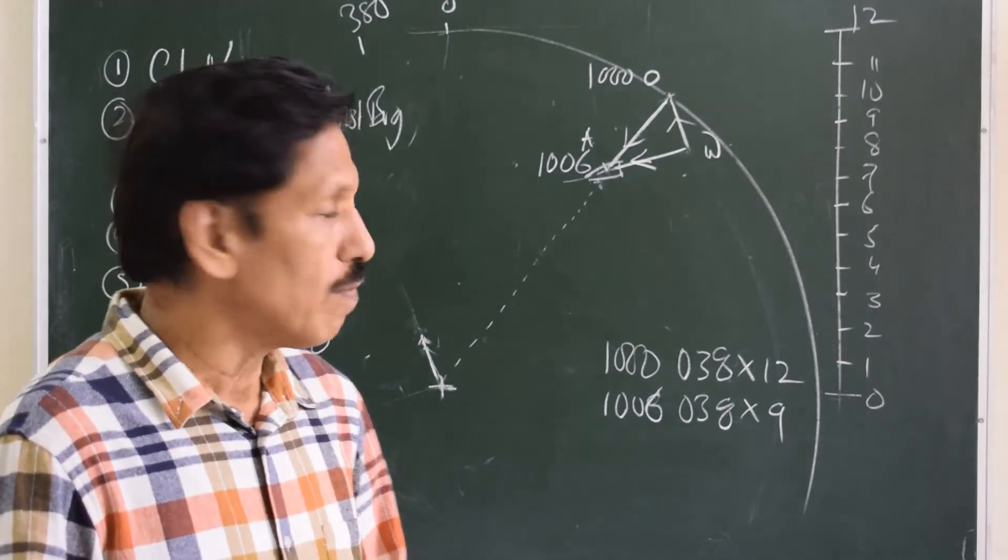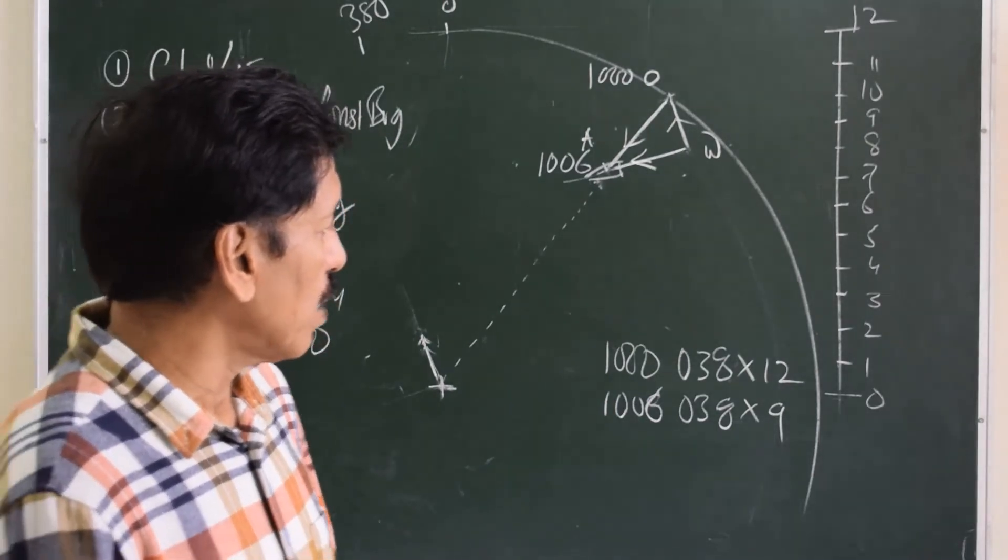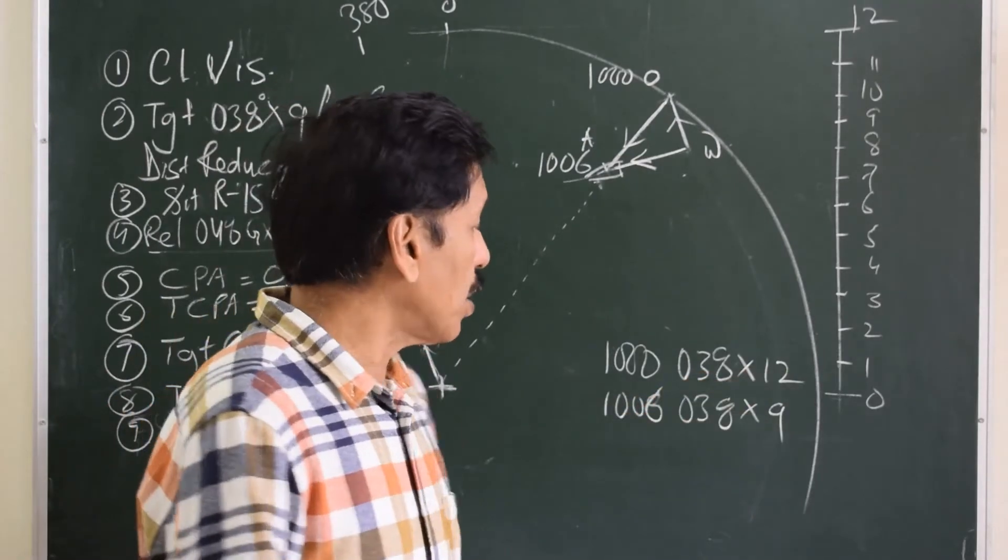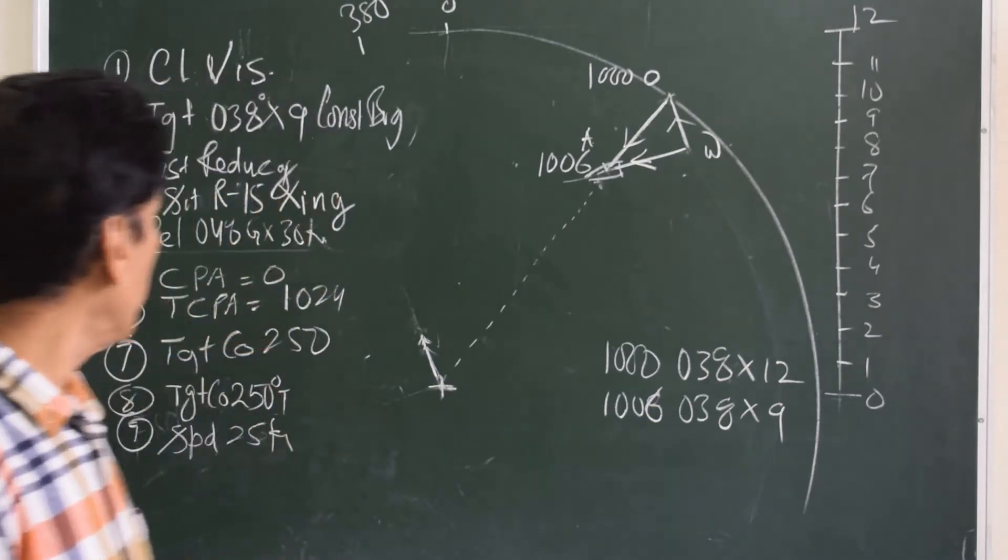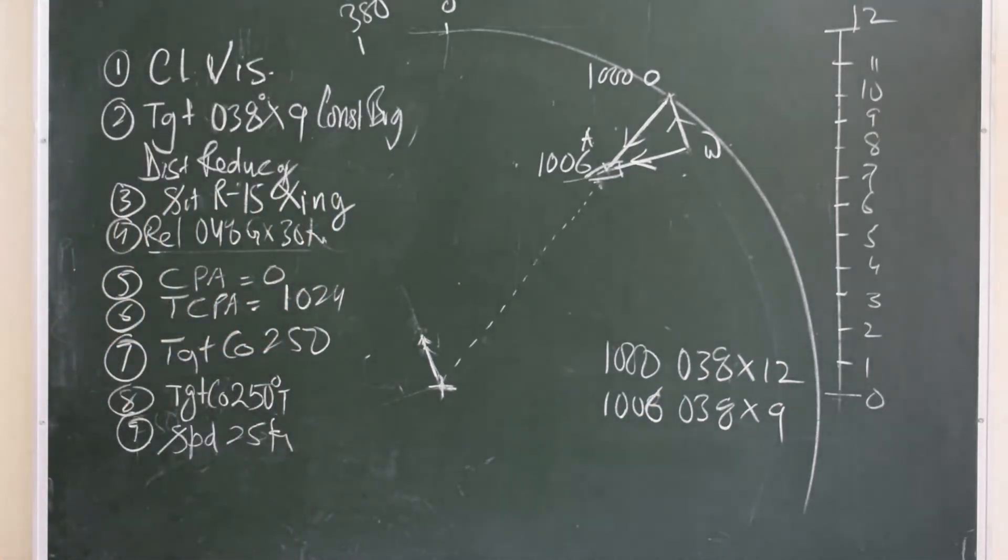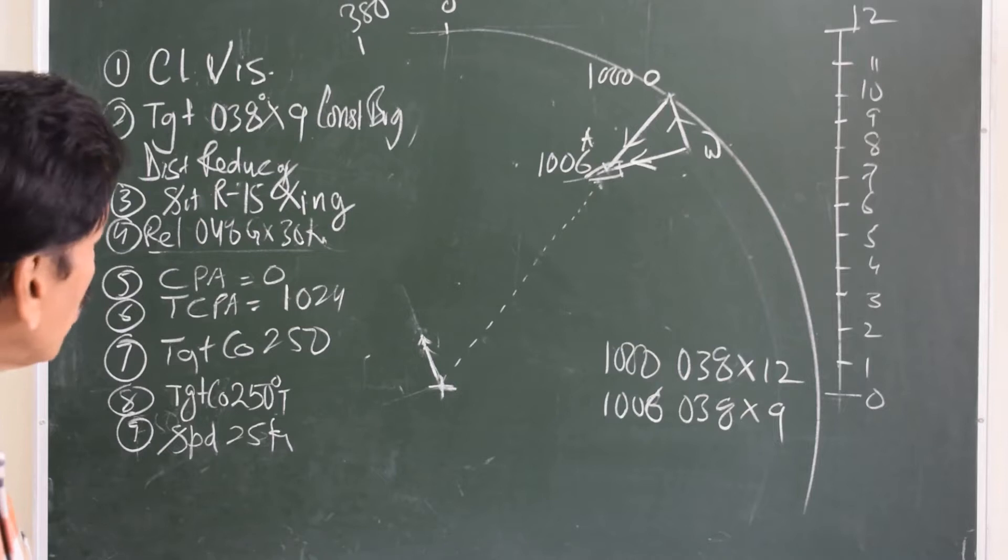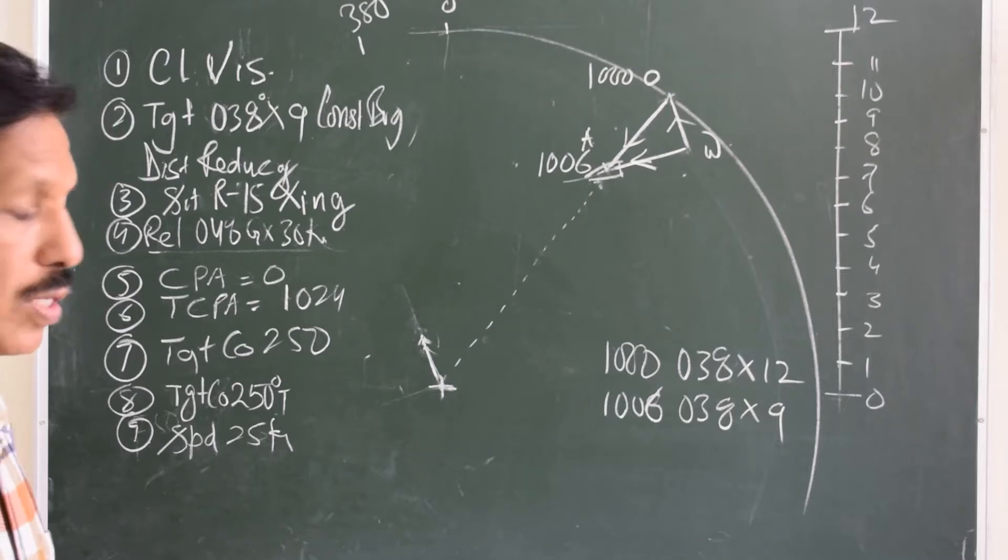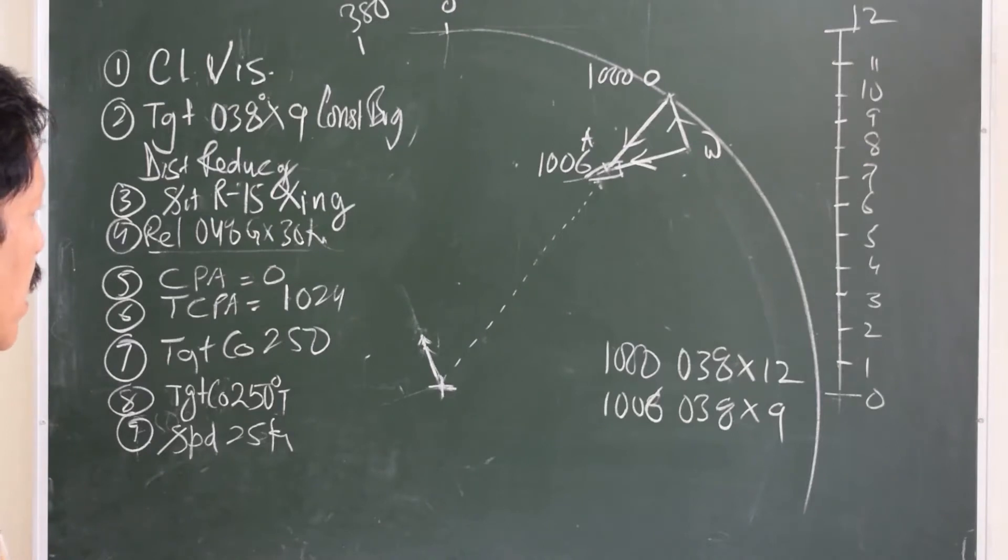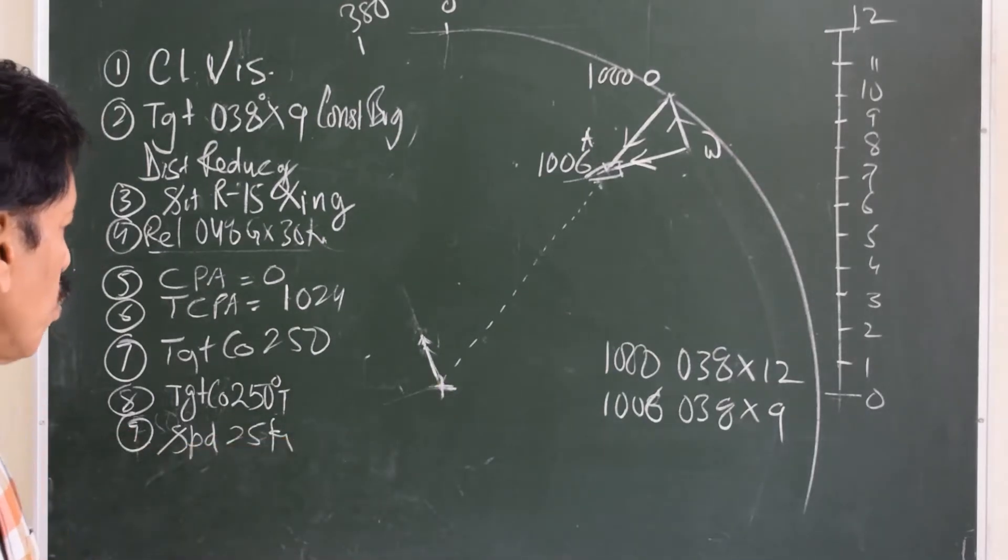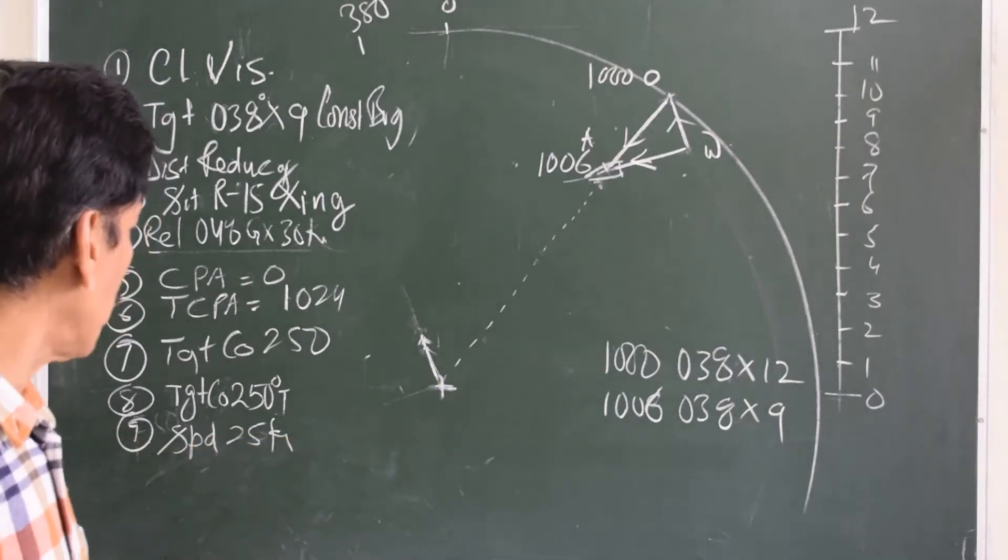We have taken a situation of clear visibility where the target bore 038 into 12 miles at 10 o'clock, and later at 10:06 it was 038 into 9 miles. Hence the report that was made was clear visibility at 10:06, target bore 038 into 9 miles. Bearing constant and distance reducing, situation was rule number 15 crossing. Relative bearing was 048 degrees green, 30 knots, CPA zero, TCPA 10:24, target course 250, target speed 25 knots.